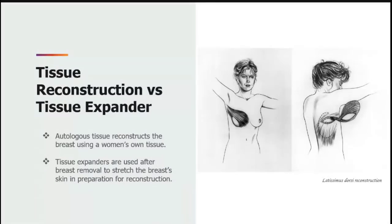Reconstructive surgery is done to reshape or rebuild the breast in patients where a mastectomy was performed. One option is to rebuild the breast using implants; another is to use a woman's own tissue to build a new breast. The diagram shown is an autologous or flap surgery that uses tissue transplanted from another place on the body, such as the back or latissimus dorsi muscles. Tissue expanders are used after breast removal to stretch the skin and increase the amount of tissue when recreating or implanting the breast.